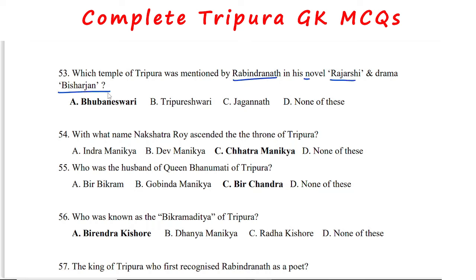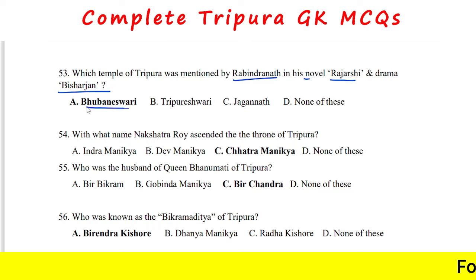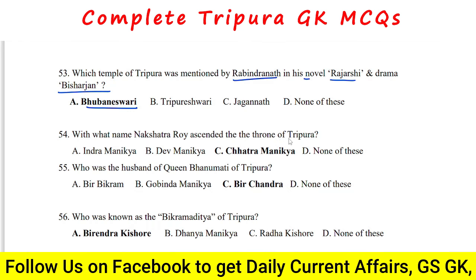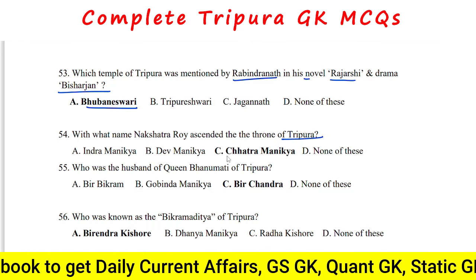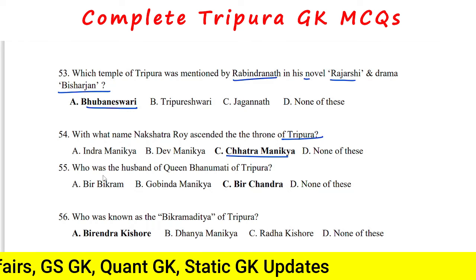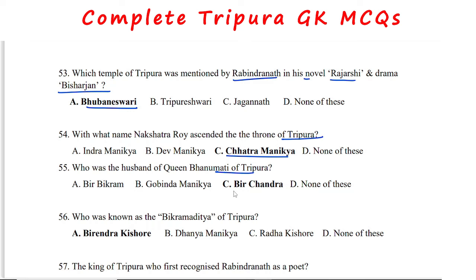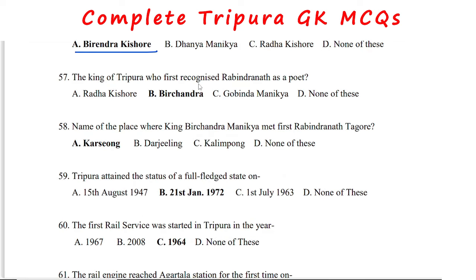The king famous for the title Rajorshi given in a novel was Maharaja Govindamanika. The temple of Tripura mentioned by Rabindranath Tagore in his novels Rajorshi and Ramavisarjan is the Bhuvaneshari temple. Nakshatra Roy ascended the throne of Tripura with the name Chatramanika. The husband of Queen Bhanumati of Tripura was Maharaja Virchandra Manika.